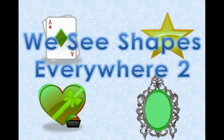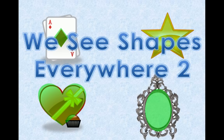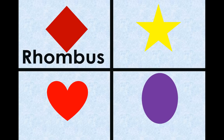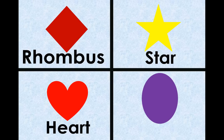We see shapes everywhere. Rhombus. Star. Heart. Oval.